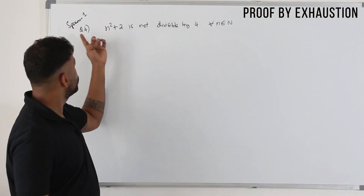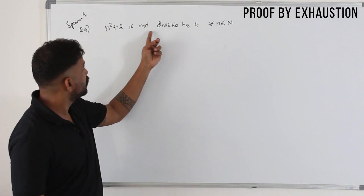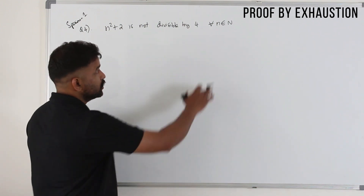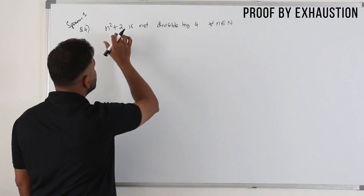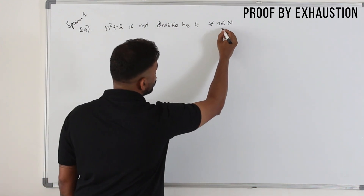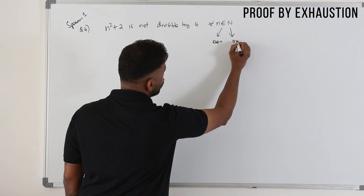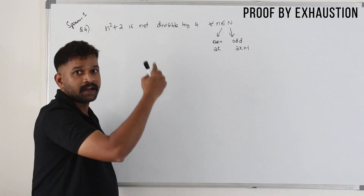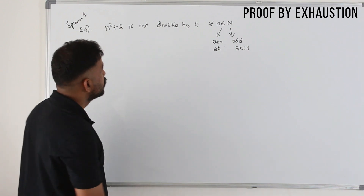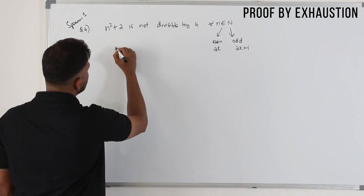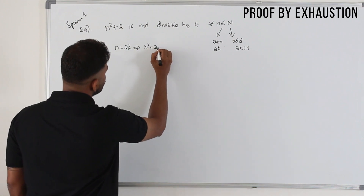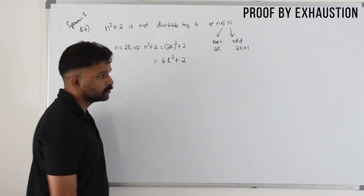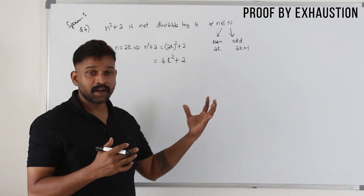I've taken a question from your specimen paper — question number 4. Prove that n² + 2 is not a multiple of 3 for all n belonging to the set of all natural numbers. There are infinite numbers here, so to prove this, we are going to divide them into categories.